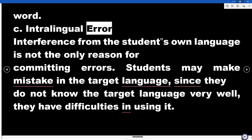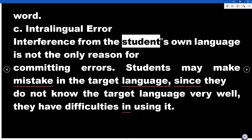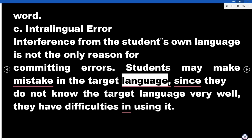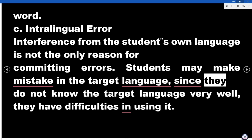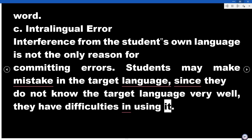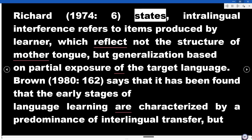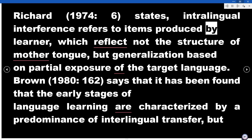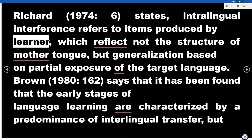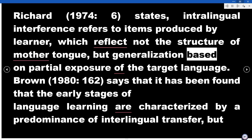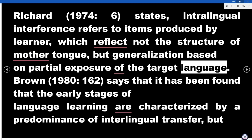Intralingual Error. Interference from the student's own language is not the only reason for committing errors. Students may make mistakes in the target language since they do not know the target language very well and have difficulties in using it. Richard (1974, p. 6) states that intralingual interference refers to items produced by the learner which reflect not the structure of the mother tongue, but generalization based on partial exposure to the target language.